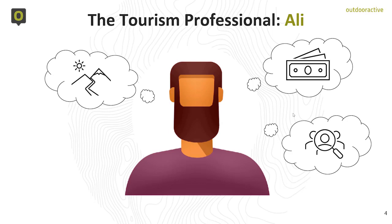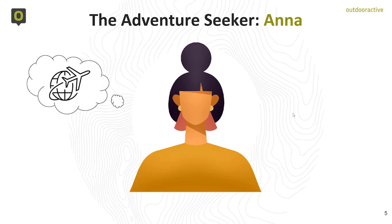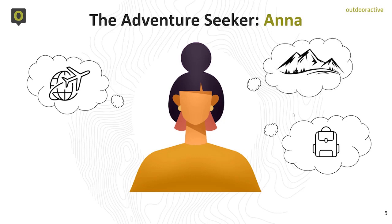Now let's go to a different part of the world. This is Anna. Anna loves to travel and she loves to be active in nature. She's an adventurous person and when she travels she likes to go hiking, cycling, mountain biking, climbing, river rafting and so on. Most importantly Anna wants a unique experience that she will remember, something she can tell her friends about. Ideally she wants to travel off the beaten track to places that are not overcrowded with tourists, where she can have a true local experience.